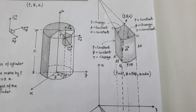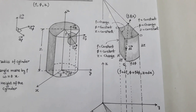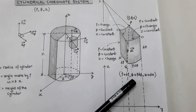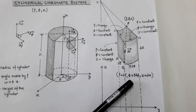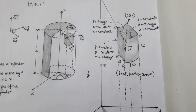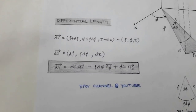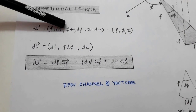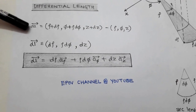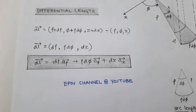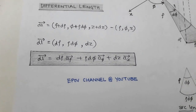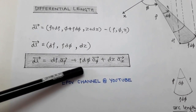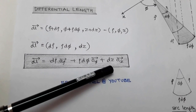The differential length vector dL is determined as final point minus initial point. Subtracting P from Q gives (d-rho, rho·d-phi, dz). Therefore, the differential length vector is: dL = d-rho · â_rho + rho·d-phi · â_phi + dz · â_z.